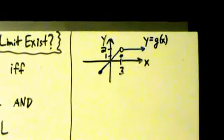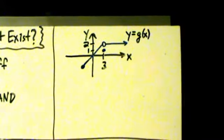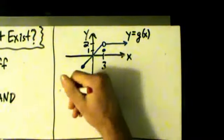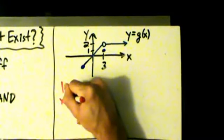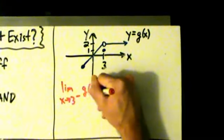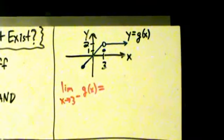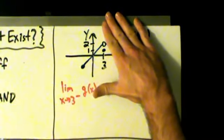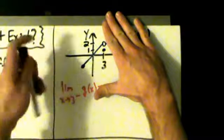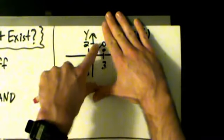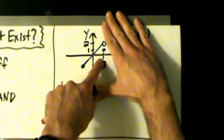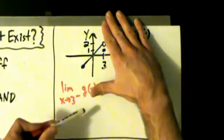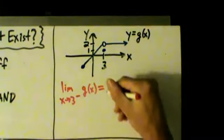Now we have a function y equals g of x, and we're going to do limits around x equals 3. So let's do a left-hand limit: the limit as x approaches 3 from the left of g of x equals what? We're going to cover up everything on the right, and as x comes into 3 from the left, where does it look like y is going? It looks like y is going to hit 2. That's not what actually happens, but that doesn't matter — all that matters is what it looks like is going to happen. So this limit equals 2.